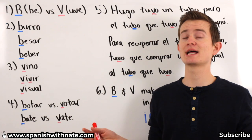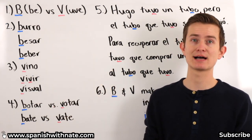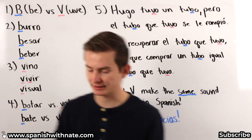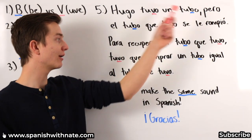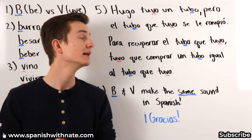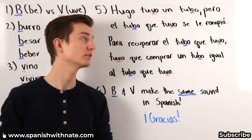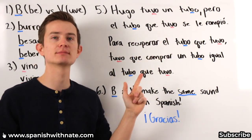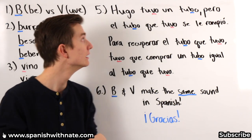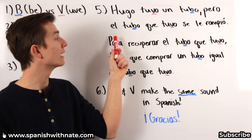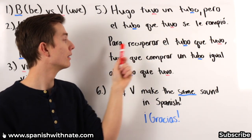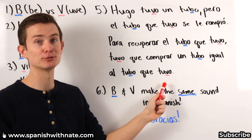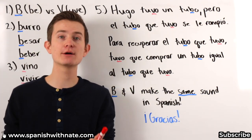All you need to understand after this lesson is that B and V in Spanish make the same exact sound. Now here's something kind of fun — I've written out a little tongue twister for you so that you can practice your B and V sound. I'll read through it first, and then we'll go through it again and I want you to say it with me. Hugo tuvo un tubo, pero el tubo que tuvo se le rompió. Para recuperar el tubo que tuvo, tuvo que comprar un tubo igual al tubo que tuvo.